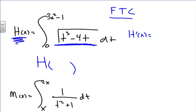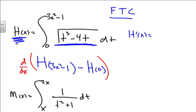So we're going to have h of the upper limit — in this case 3x squared minus 1 — minus h of 0. Now we're going to figure out what the derivative of h of x is, which means we take the derivative of this entire expression, and that equals h prime of x.